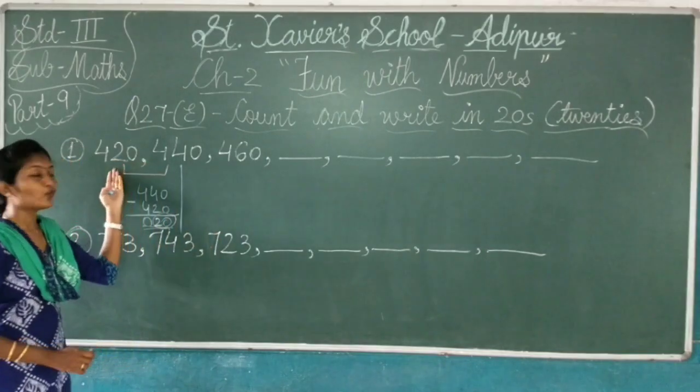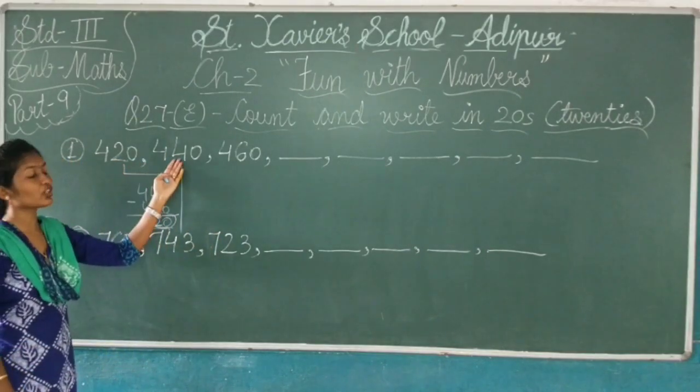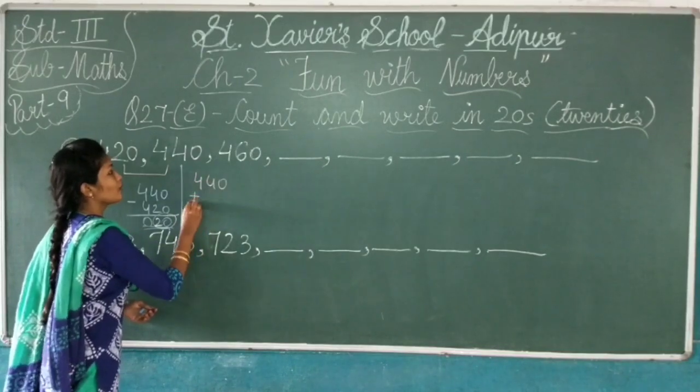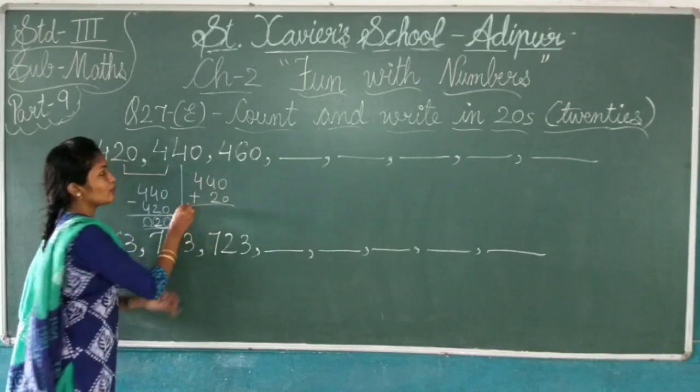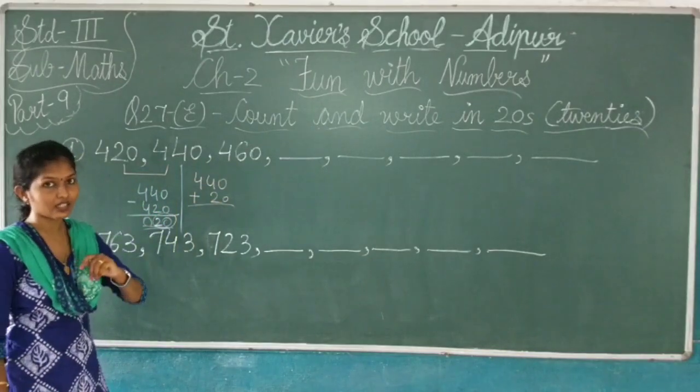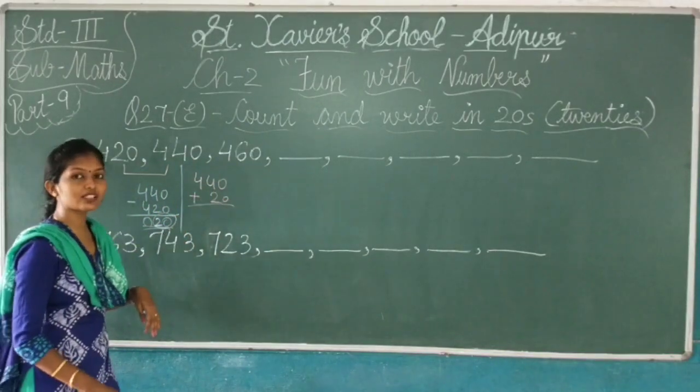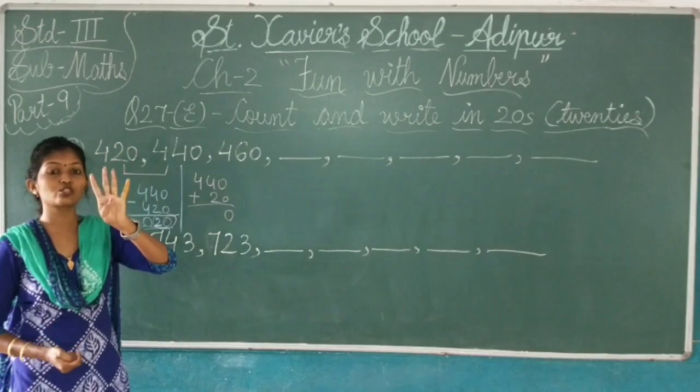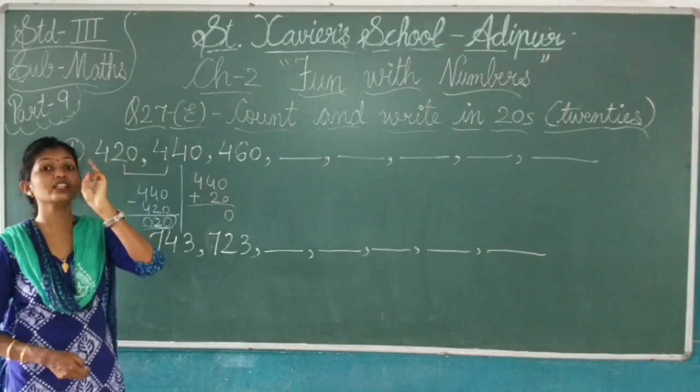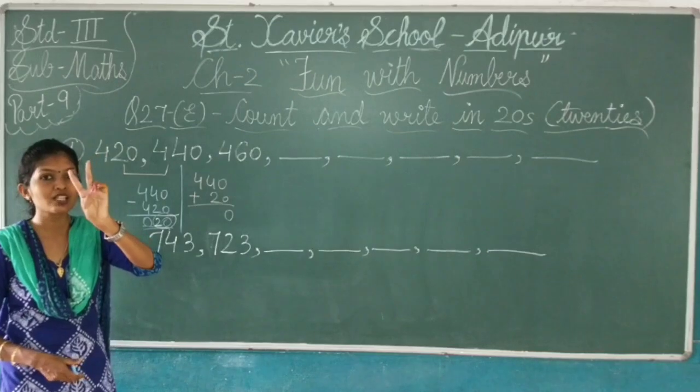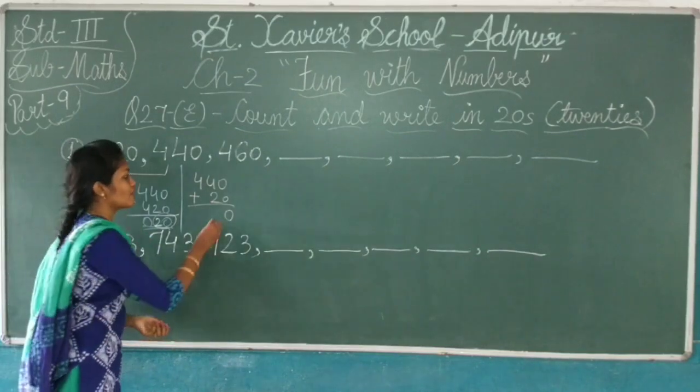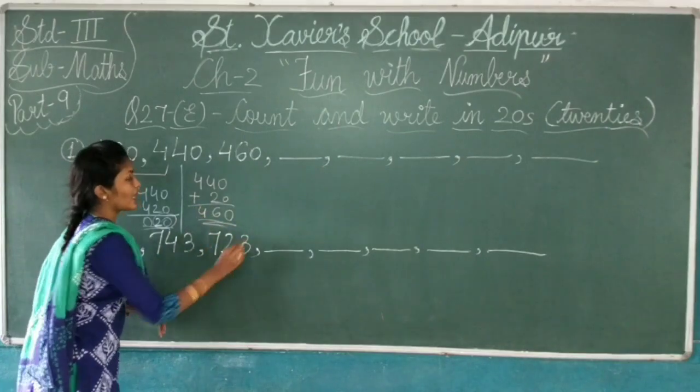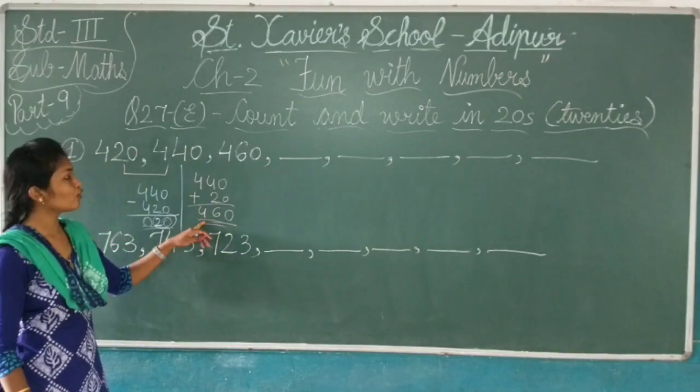420 plus 20, then you will get 440. Let's see: 420 plus 20, so we have 440. 0 plus 0 is 0, 2 plus 2 is 4, and 4 as it is. 440.